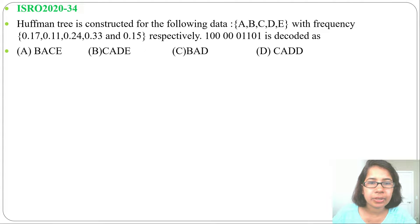Huffman tree is constructed for the following data A, B, C, D, E with frequency 0.17, 0.11, 0.24, 0.33 and 0.15 respectively. 1 0 0 0 0 0 1 1 0 1 is decoded as, and 4 options are given.